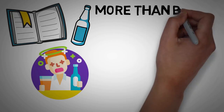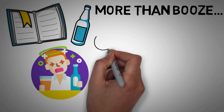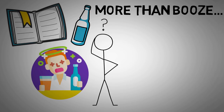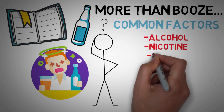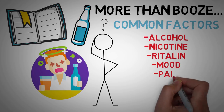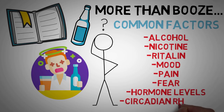But state-dependent memory involves more than just alcohol. Other substances, as well as other internal factors, can play a part in memory retrieval. Common factors that influence the state that you are in include alcohol, nicotine, Ritalin, the mood you're feeling, the pain you feel, even fear, hormone levels, and the circadian rhythms that you're used to.